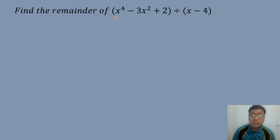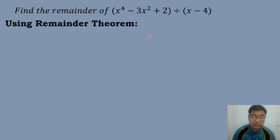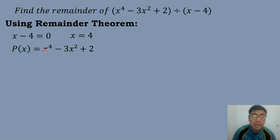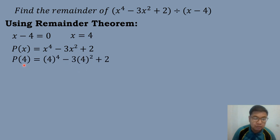So let's have our second example. Find the remainder of X to the fourth power minus 3X squared plus 2 divided by X minus 4. We will use the Remainder Theorem and equate the divisor by 0: X minus 4 equals 0, so X equals 4. We will substitute the value of X, which is 4, into our dividend P of X equals X to the fourth power minus 3X squared plus 2. So we have P of 4 equals 4 to the fourth power minus 3 times 4 squared plus 2.